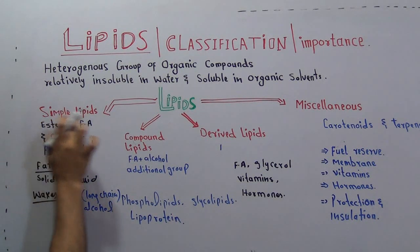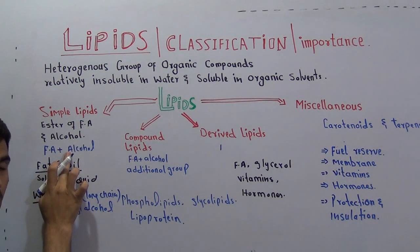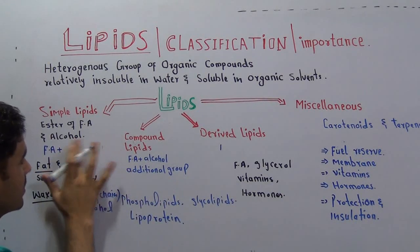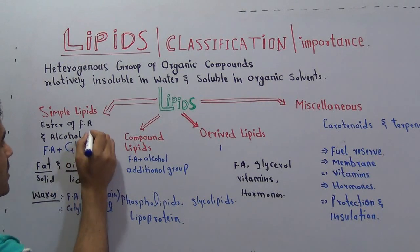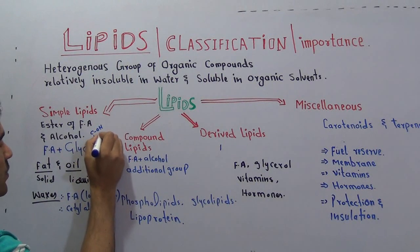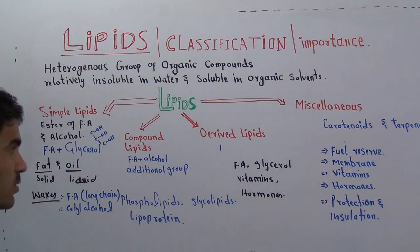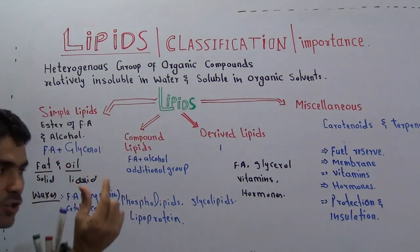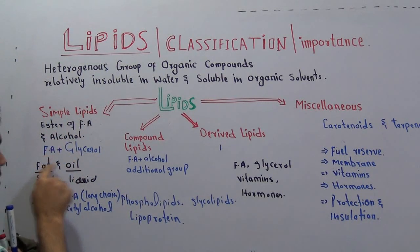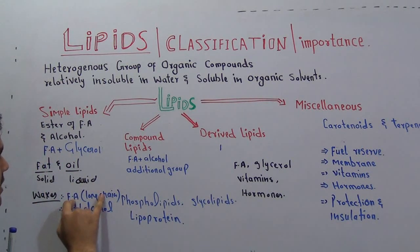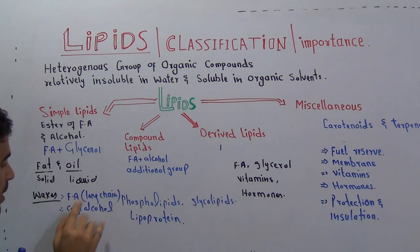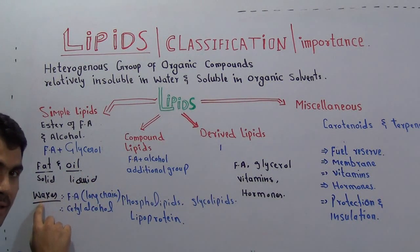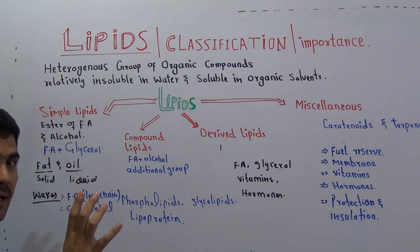Remember, in simple lipids like fats and oils, in place of cetyl alcohol, a special alcohol called glycerol is used. Glycerol is an alcohol which contains three carbons, and every carbon is attached with one OH group — that is why we call it glycerol. Whenever glycerol is combined with fatty acid, that gives us fats and oils. When long chain fatty acid is combined with cetyl alcohol, we get waxes. So both waxes and fats and oils are esters.